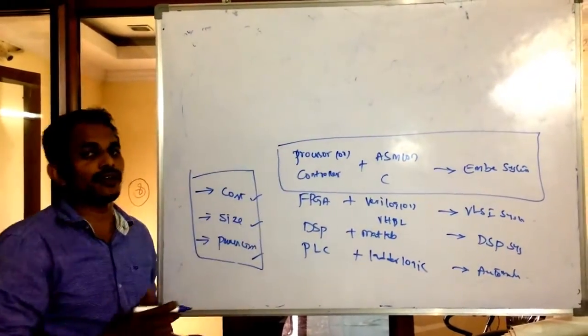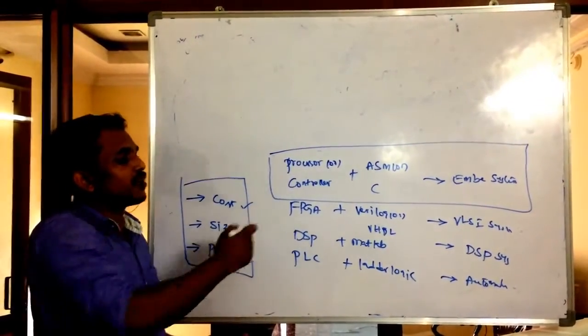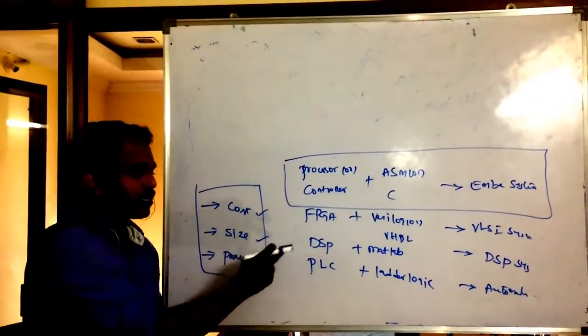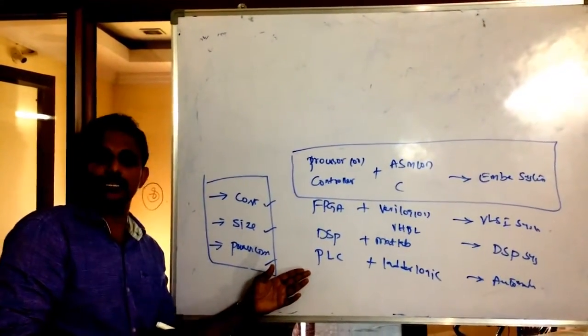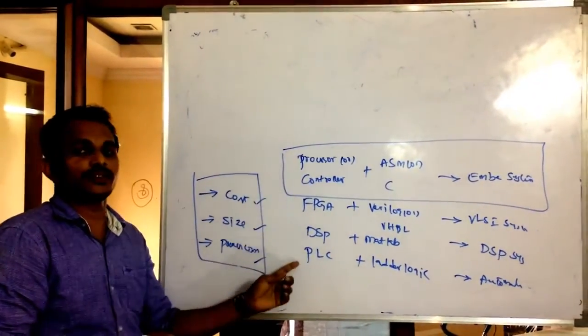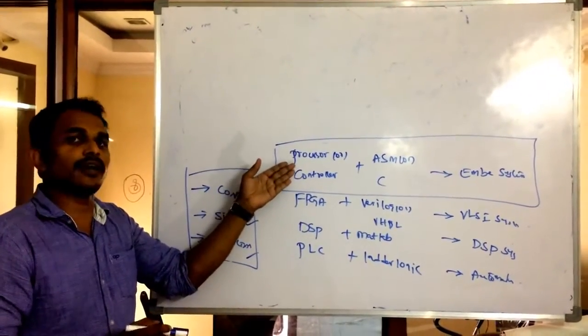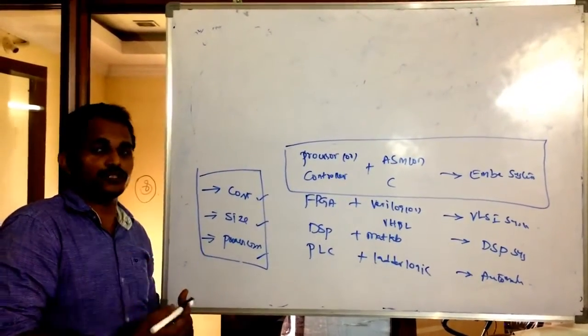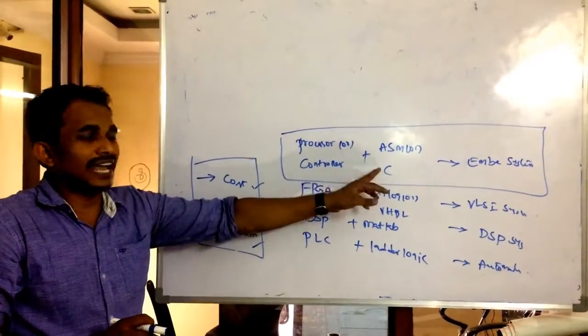If you observe these three parameters and the devices in different domains: processors and controllers are available at very low cost in the market. FPGA devices are available around 15 to 20 thousand rupees. DSP processors are available for 3 to 5 thousand rupees. PLC minimum cost is 10 thousand rupees. The programmable devices have very high cost compared to embedded, which is available very cheap in the market.